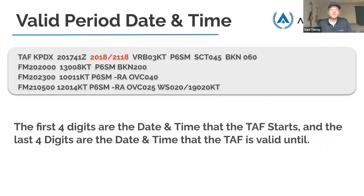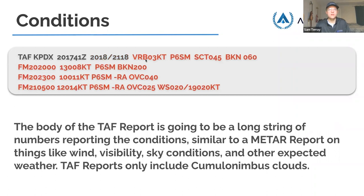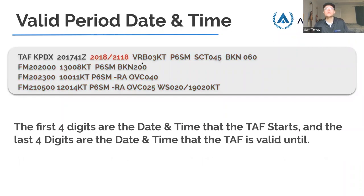In this Portland Oregon TAF example, the TAF came out on the 20th day at 1741 Zulu, but the actual forecast period is valid from the 20th day at 18 Zulu to the 21st day at 18 Zulu — valid for an entire day. There are four lines of the TAF covering 24 hours. The first line shows VRB03KT (variable at 3 knots — when winds are light and changing direction), P6SM (plus 6 statute miles visibility, meaning over 6 miles), scattered at 4,500 feet, broken at 6,000 feet.